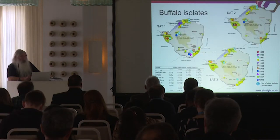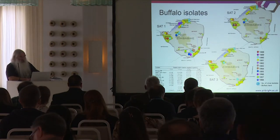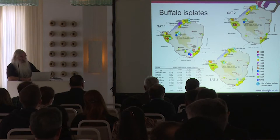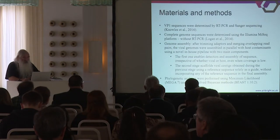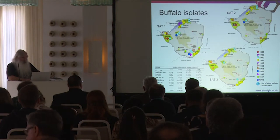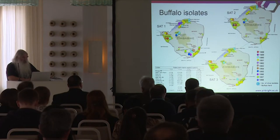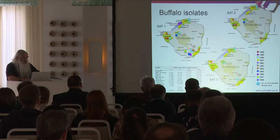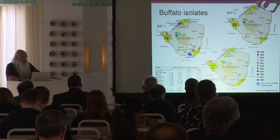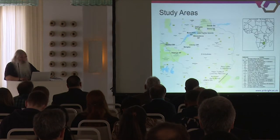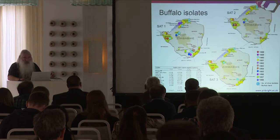Looking at the isolates we actually got — three maps showing SAT1, SAT2, and SAT3 — each circle represents a herd and the number in it shows the number of viruses isolated. We have a good selection around the whole country. Looking at isolation rates by age: under one year gave 47%, one to three years at 69%, and over three years at 29%, giving an overall 41% rate of isolation. So we had good recovery rates of viruses.